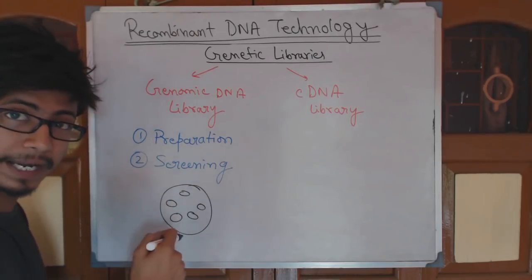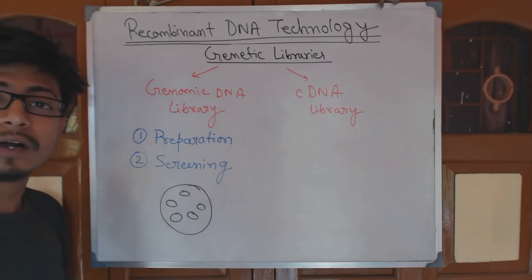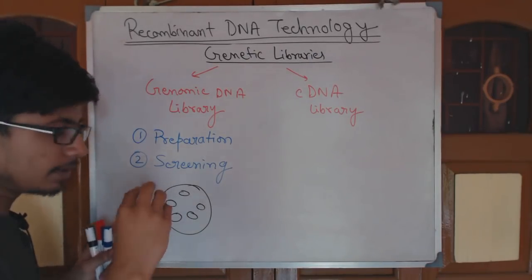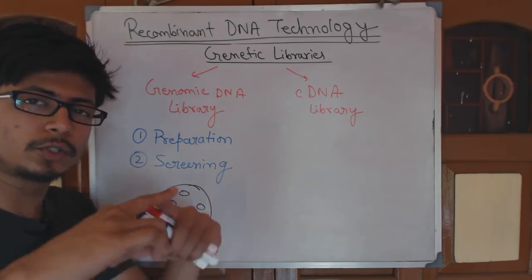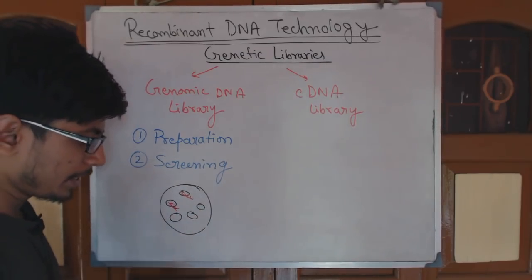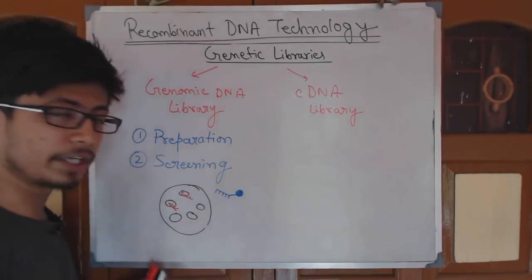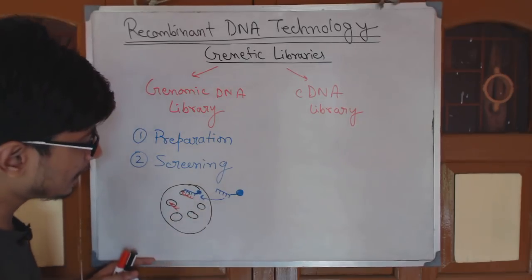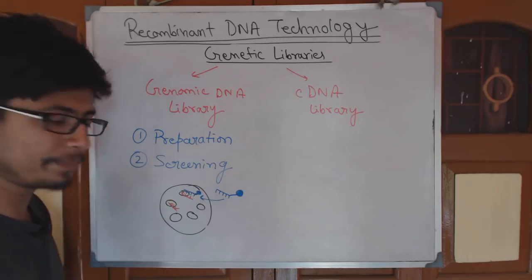You know the gene is definitely somewhere in the plate. So what you do is simply screen this library. You find the target gene by designing what is called a single-stranded DNA as a hybridizing probe. You know your target gene is somewhere in this petri plate and you also know the sequence of that gene. So you make this target gene single-stranded and you make a probe DNA which is also single-stranded, complementary to your target DNA, attached to some radioactive or fluorescent molecules.